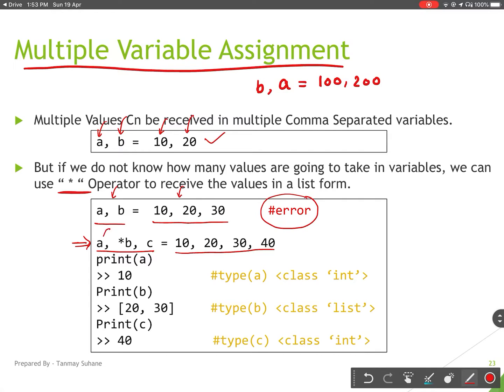So the first value will go to 'a', and then n number of values will be taken by 'b' as a list, and the last value will go to variable 'c'. So you can see 10 went to 'a', 40 went to 'c', and 20 and 30 went to 'b' as a list.